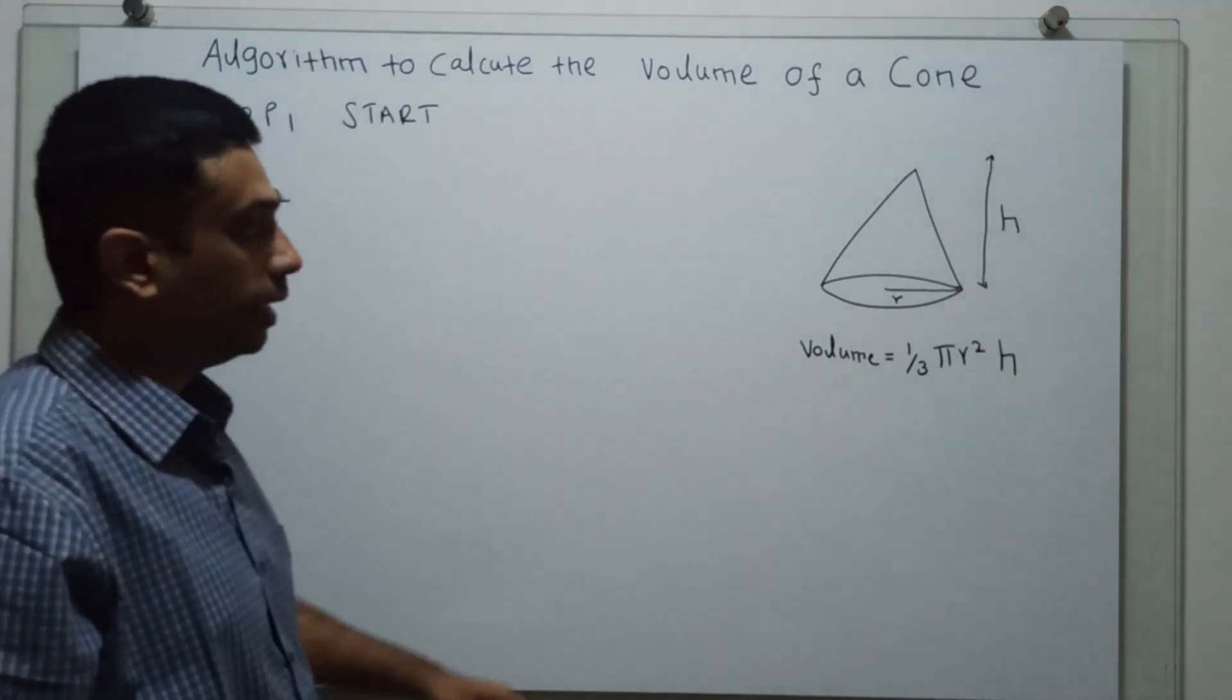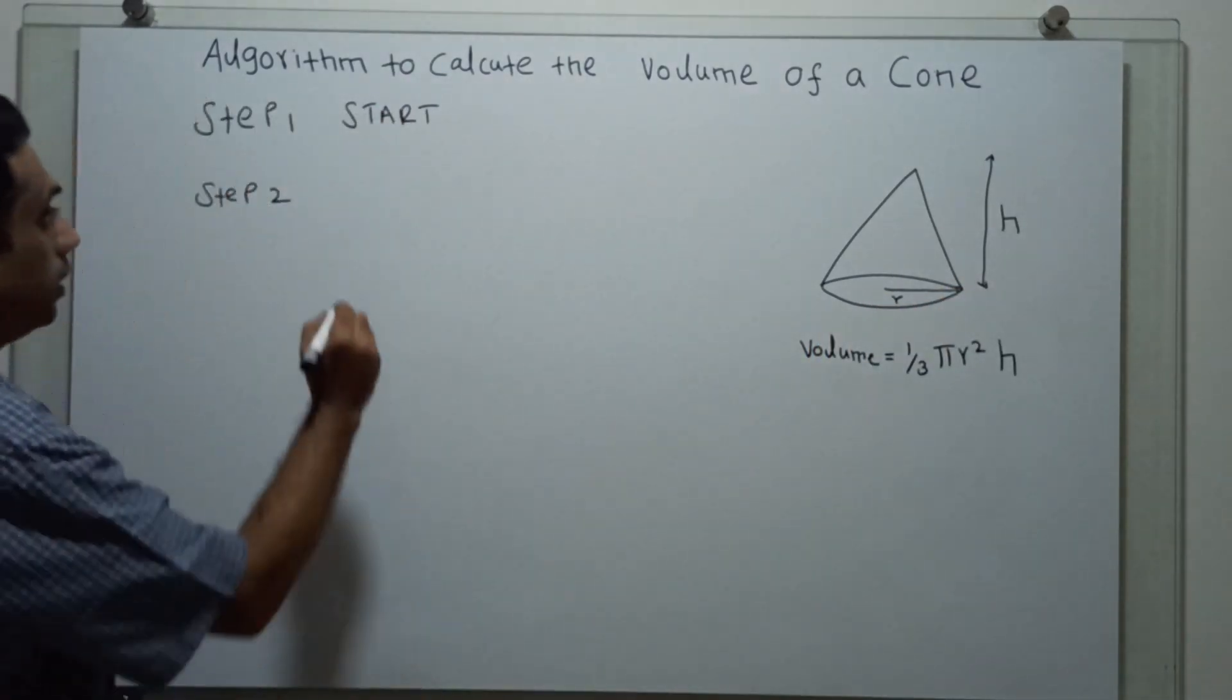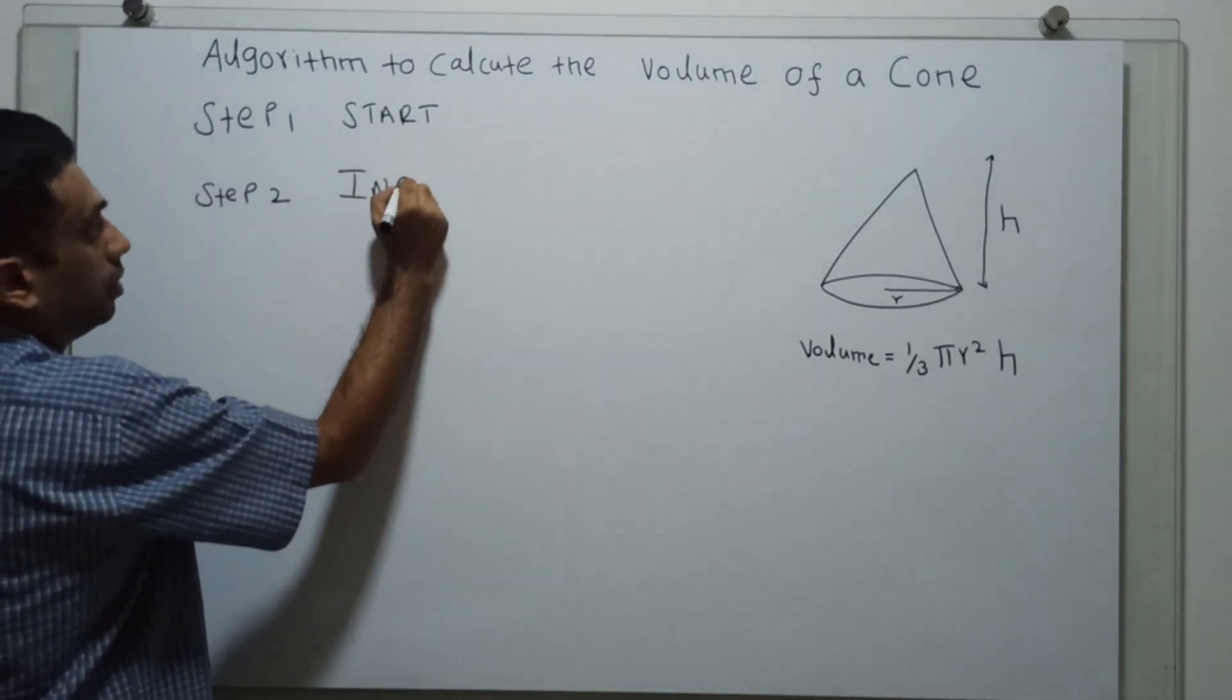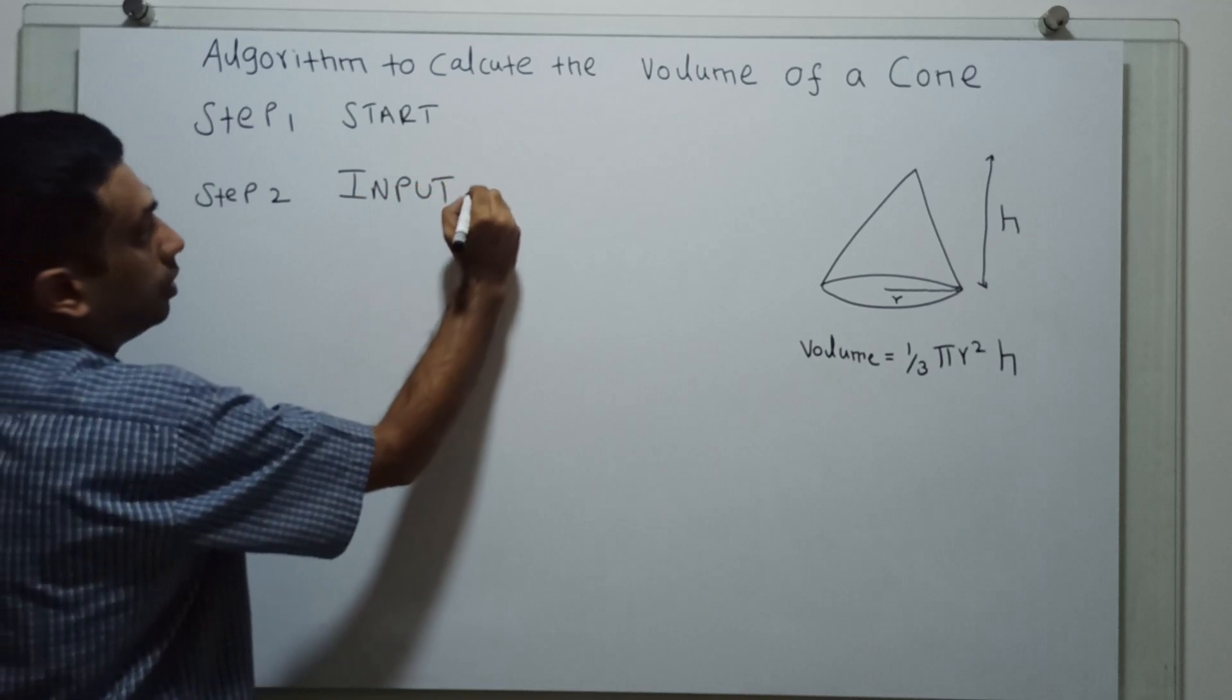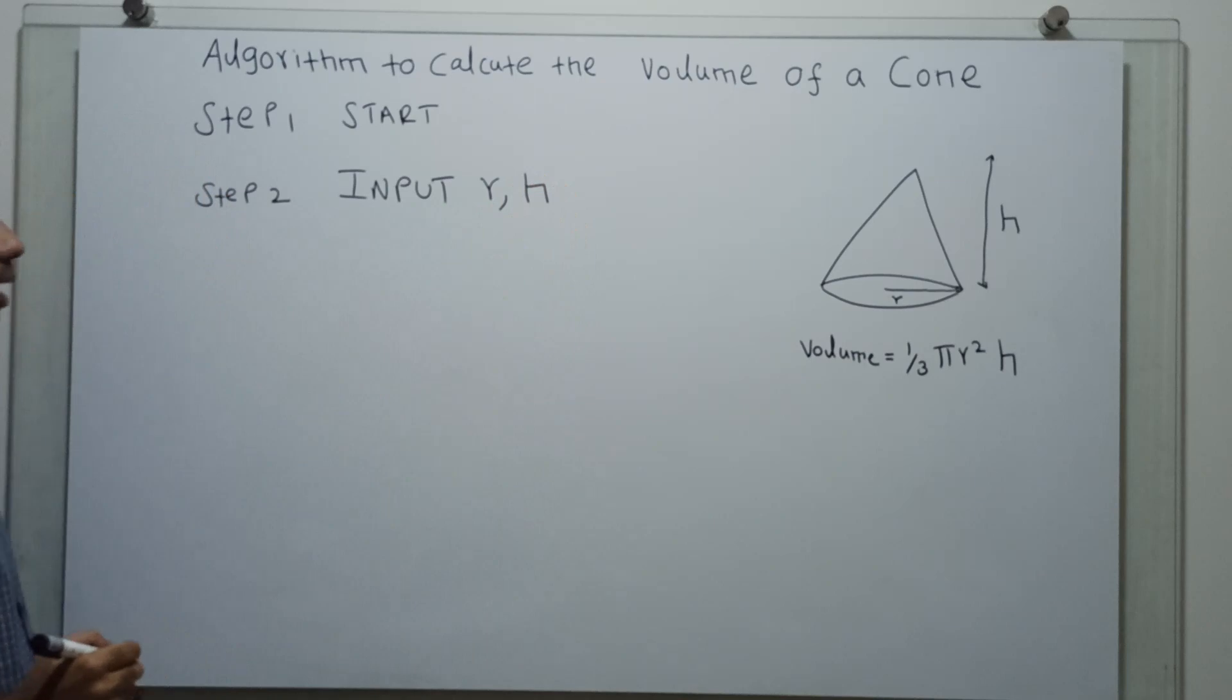Step 2, I have to get an input of radius and the height. Input r is for radius, h is for height.